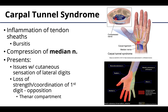Now let's discuss carpal tunnel syndrome. It most commonly occurs when there is an increase in size of some of the contents of the tunnel, such as what can occur with inflammation of the tendon sheaths, which is a form of bursitis. The tendon sheaths surrounding the tendons can increase in size and become inflamed due to infection, fluid retention, or excessive and overly repetitive actions of the flexor muscles. This can cause compression of the median nerve within the carpal tunnel, affecting branches that come off within or just distal to the tunnel.